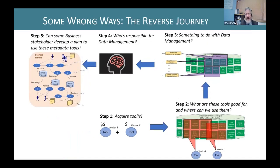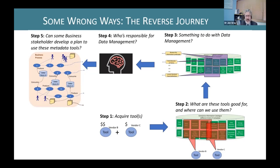Now there are some wrong ways, and I'll highlight a small number. Sometimes there is the reverse journey. A business stakeholder is asked to develop a plan to use metadata tools — but why are they at that step? Because someone has gone and bought tools, then gone: we've bought some tools, what are they good for? Something to do with data management — who's responsible? That person then says to the business: hey, we've bought this bunch of tools, what do you think we can do with them? We've seen this with organizations where someone has been told to do something with these tools. Don't rush out and spend money on tools — go the right way around.